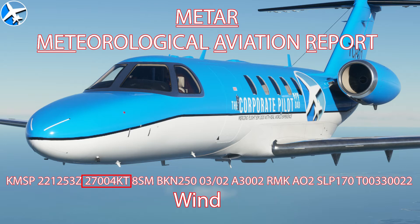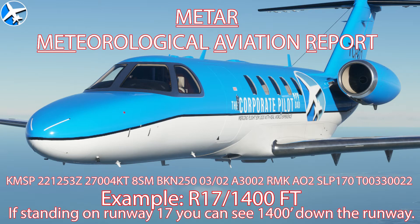Next is the wind — winds are 270 degrees at 4 knots. Next is the visibility, 8 statute miles. In the United States and some other places, visibility is in statute miles; some places it will be in meters. Other times you'll see visibility given in feet when associated with an RVR, or runway visual range.